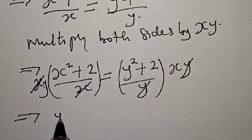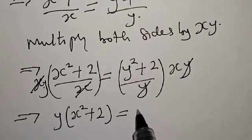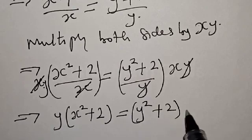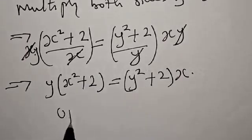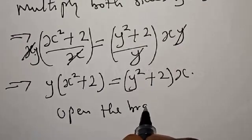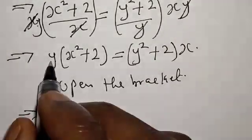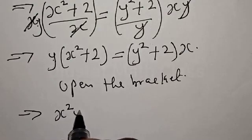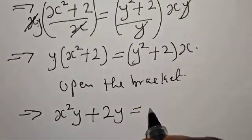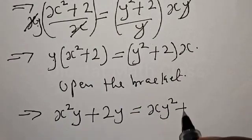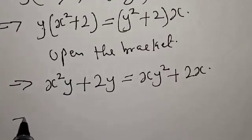This implies that we have y into x squared plus 2, equal to x squared plus 2 — that is, y squared plus 2 into x. Now let's open the bracket: y times x squared gives x squared y, plus y times 2 gives 2y, equal to y squared times x gives xy squared, plus 2 times x gives 2x.